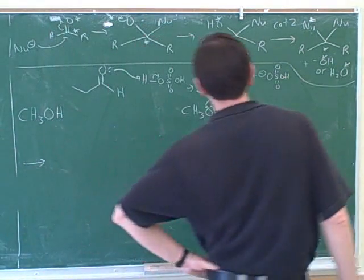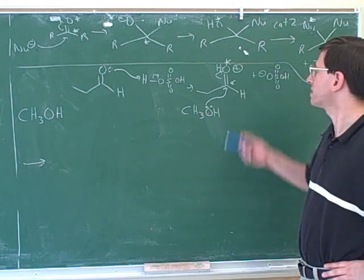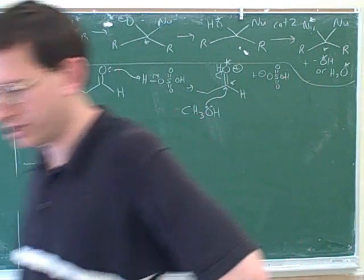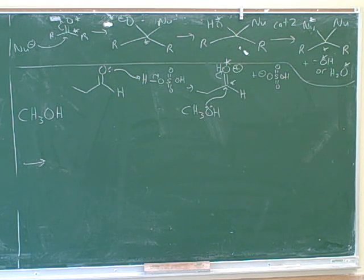Now that we have the electron pushing arrows in, we should be able to draw the intermediate, because the electron pushing arrows tell us which bonds to form and which bonds to break. So let's take our time and do what the arrows tell us to do.